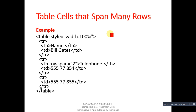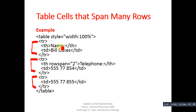Next is row span. Here three table row tags are used. In the first table row, table heading Name is available with its data. In the second table row, a table heading is further divided into two rows using rowspan. The first value is available within this table row and the second value's table row is available in another table row.